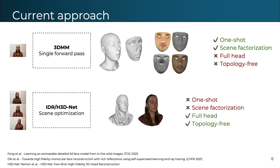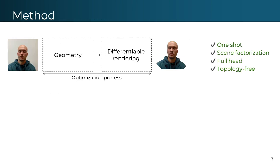Recently, implicit surface representations in combination with differentiable rendering techniques have been proposed. With this approach, the model is fitted to a specific scene by learning at the same time the shape and the surface color. However, as this procedure uses multi-view consistency among the input images, they are not well suited for the one-shot scenario. We propose CIRA to overcome these limitations.